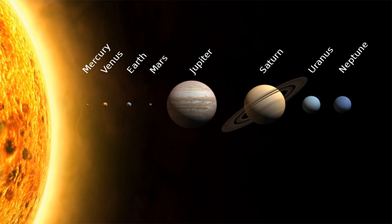This article is about the Sun and its planetary system. For other similar systems, see planetary system. For solar power systems, see photovoltaic system. The solar system is the gravitationally bound system of the Sun and the objects that orbit it, either directly or indirectly. Of the objects that orbit the Sun directly, the largest are the eight planets, with the remainder being smaller objects — the dwarf planets and small solar system bodies. Of the objects that orbit the Sun indirectly, the natural satellites, two are larger than the smallest planet, Mercury.